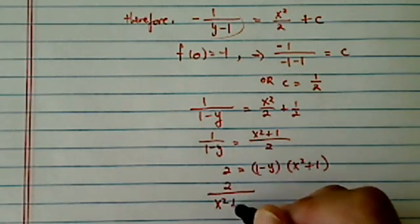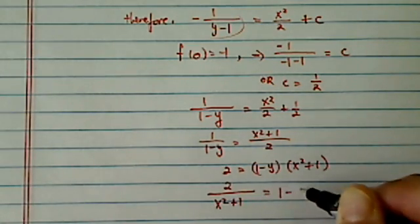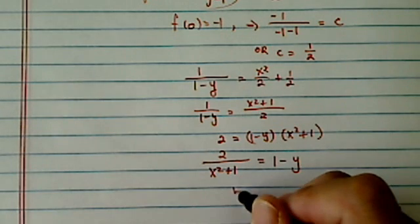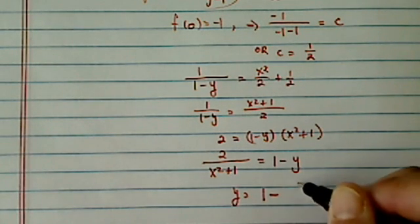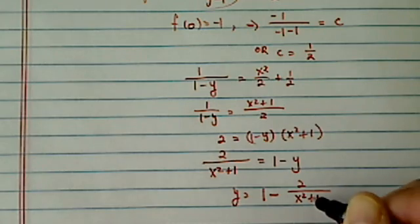I want to just solve it. So 2 over x squared plus 1 is equal to 1 minus y. And one more step there, so y is equal to 1 minus 2 over x squared plus 1.